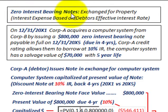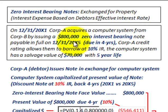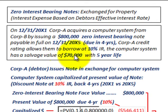We're looking at a zero interest bearing note exchange for property. Our example involves interest expense based on the debtor's effective interest rate. On 12/31/20X1, Corporation A acquires a computer system from Corporation B by issuing an $800,000 zero interest bearing note payable in full on 12/31/20X5 — due in four years. Corporation A's credit rating allows them to borrow at a 10% annual interest rate. The computer system has a salvage value of $70,000 and a five-year depreciable life.